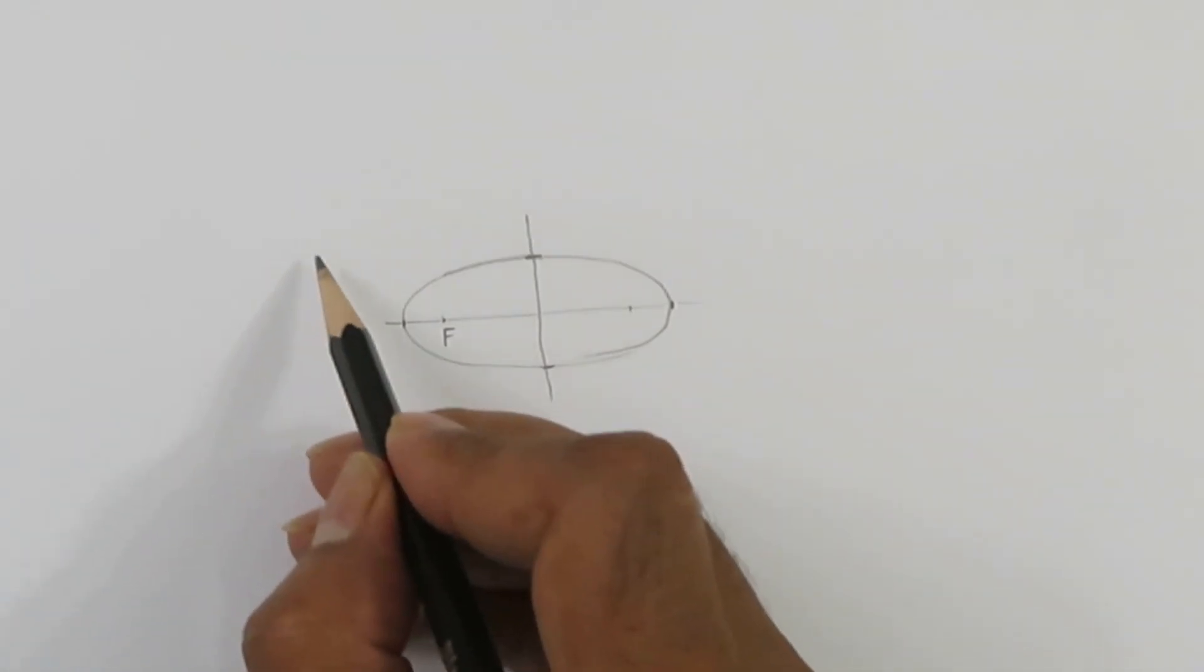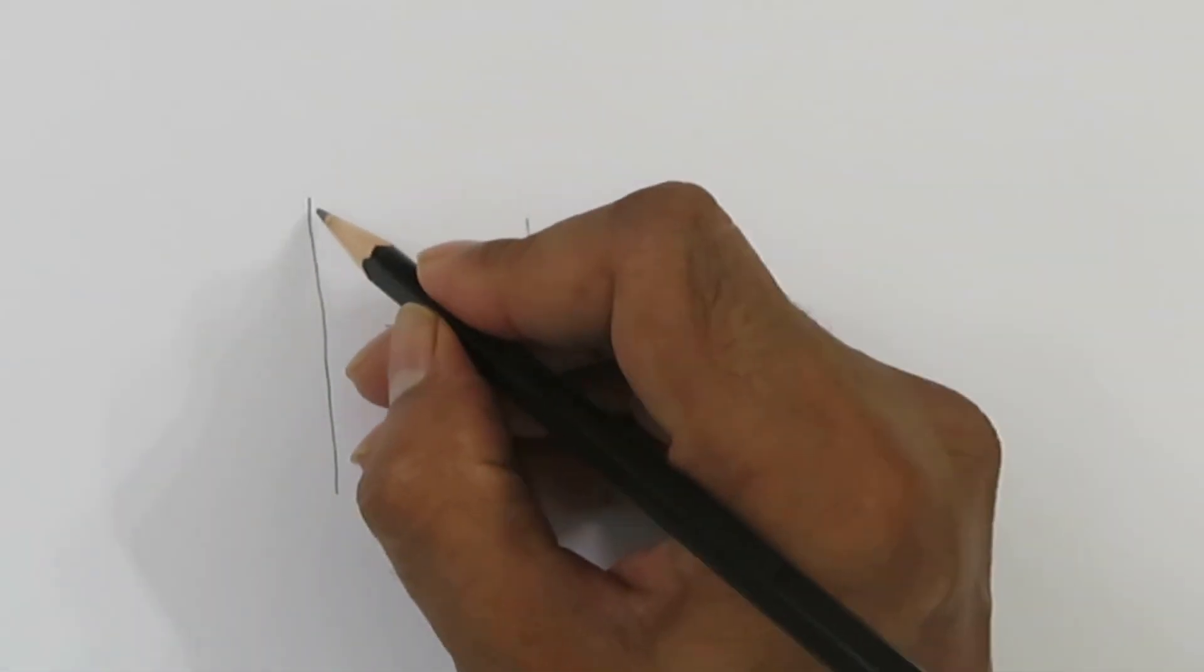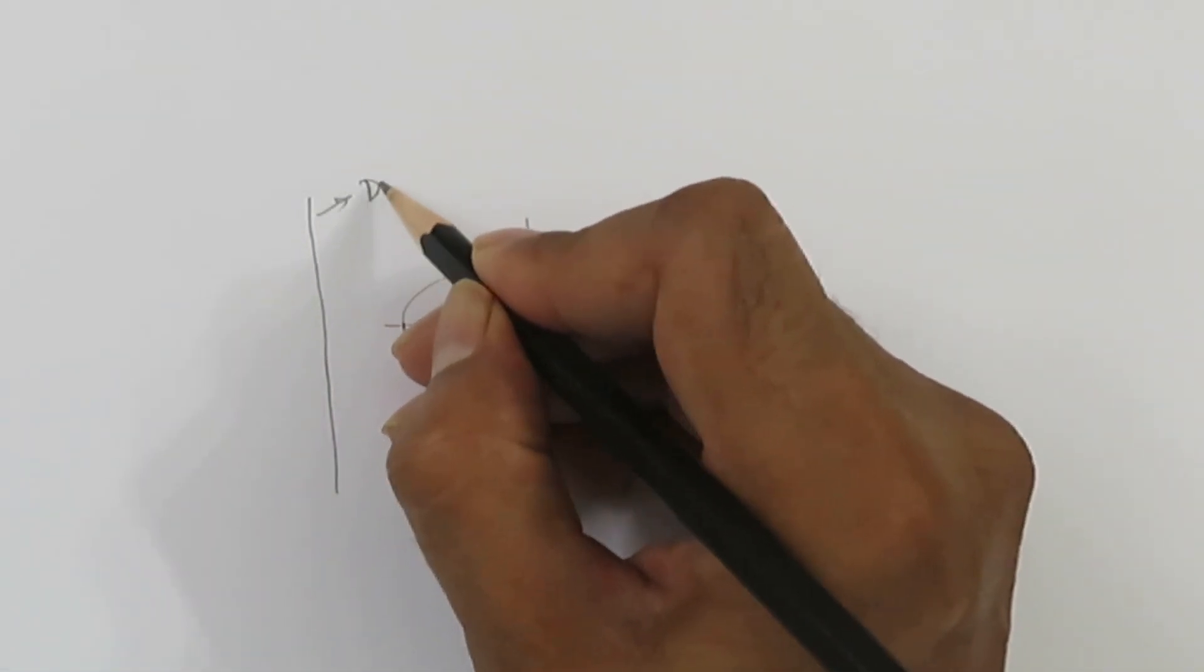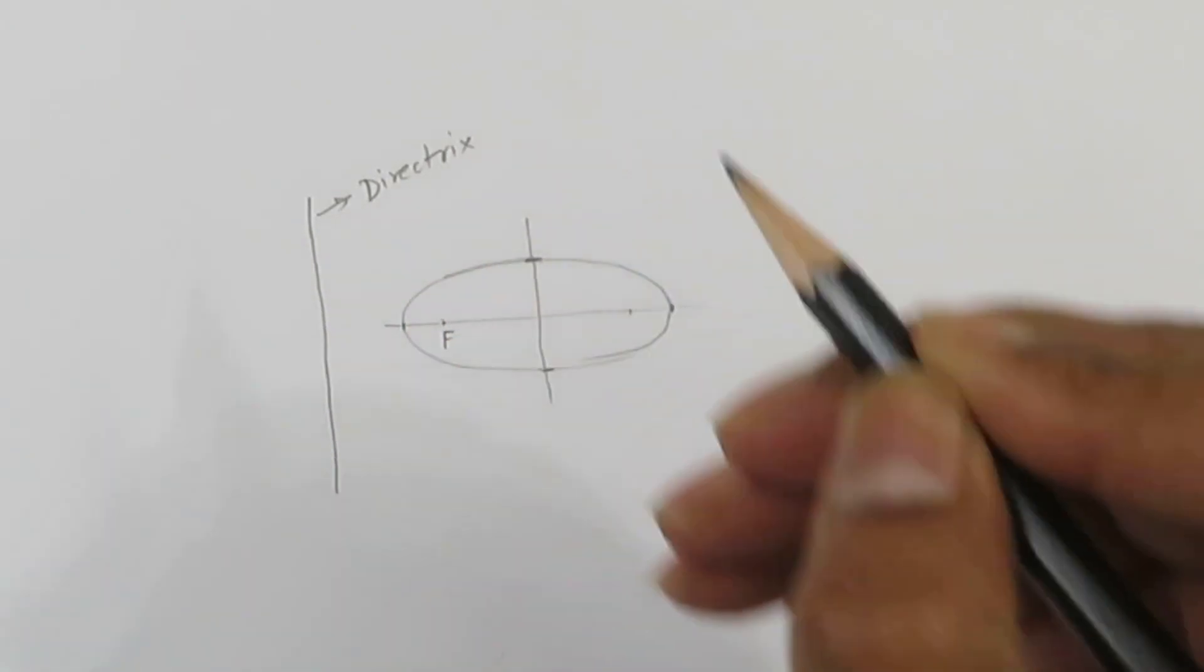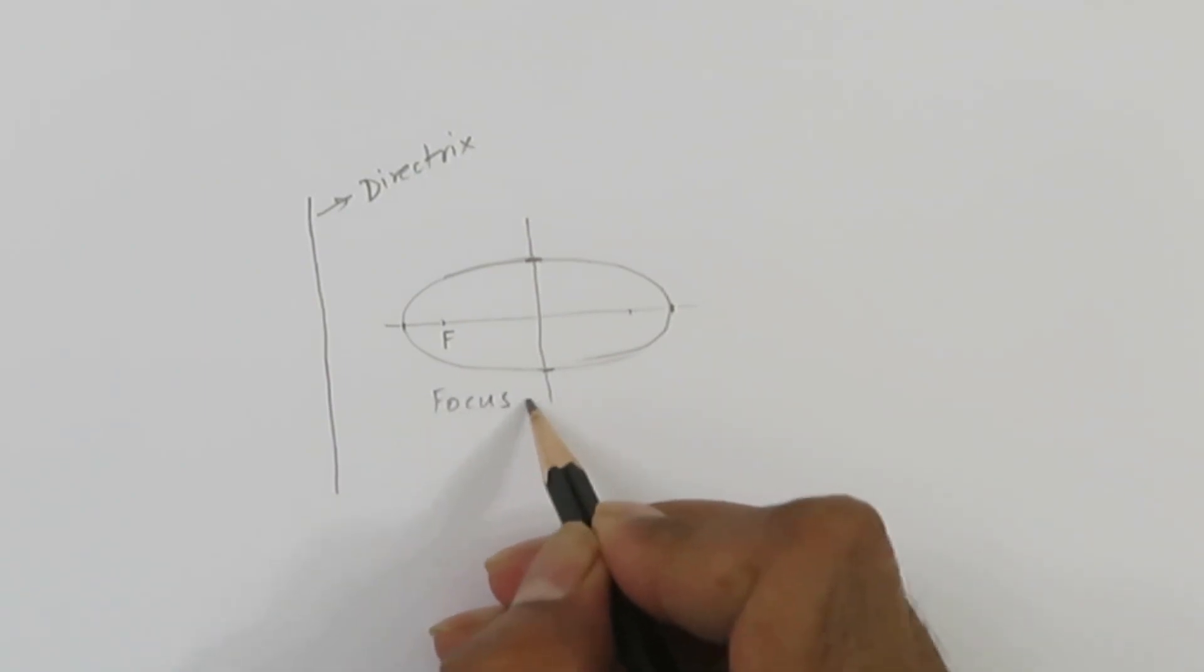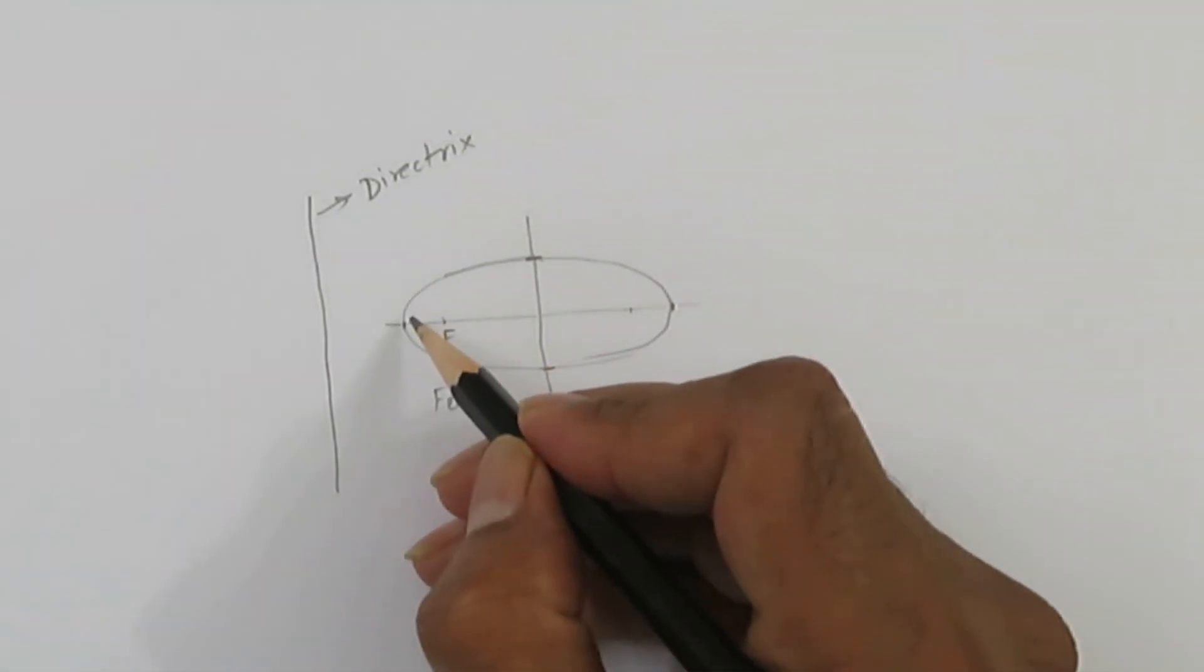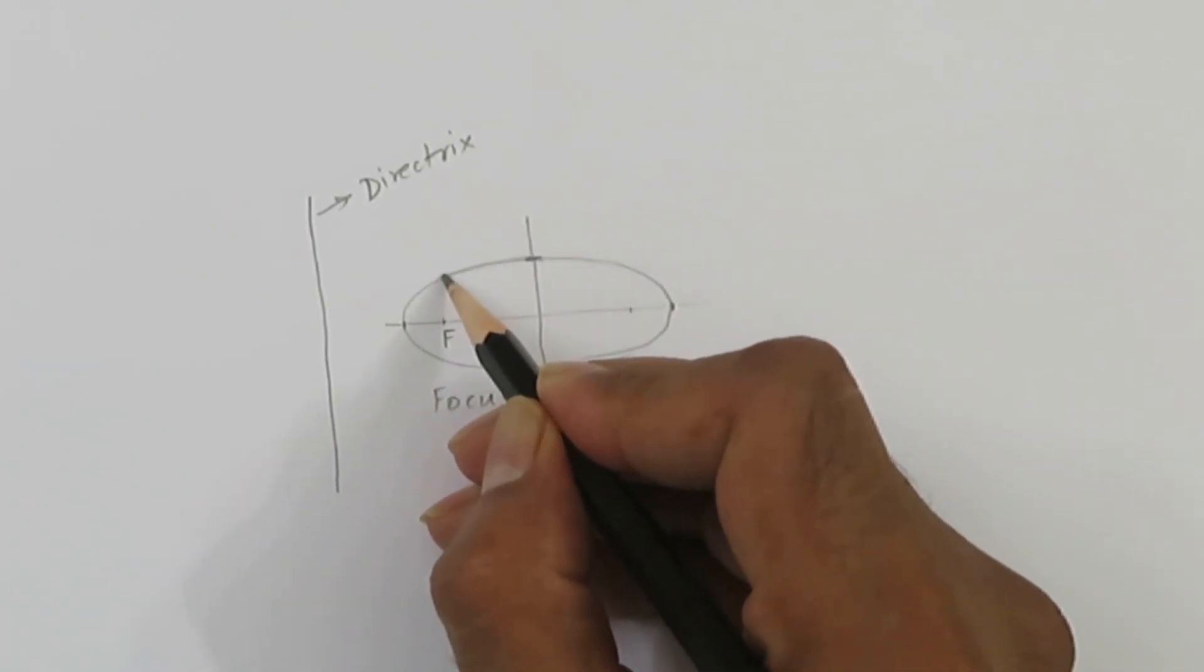There is a property of this ellipse that a line which is known as directrix and this is focus. Any point on the ellipse, let's say take this point.